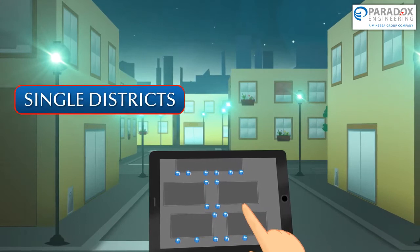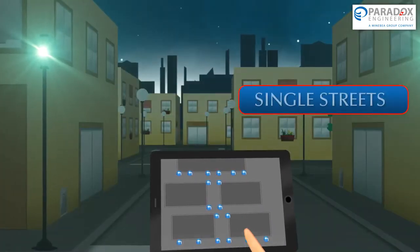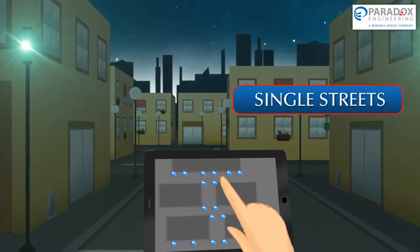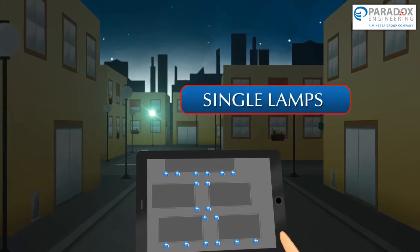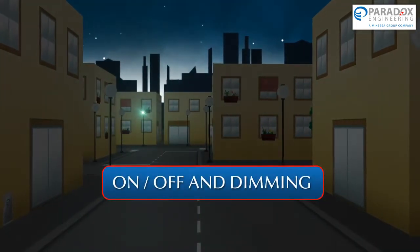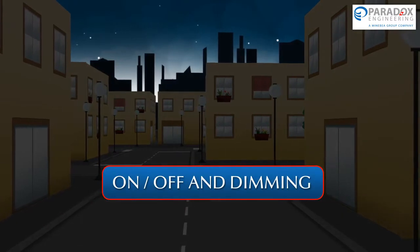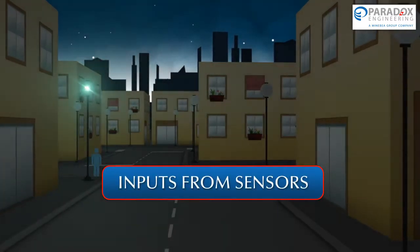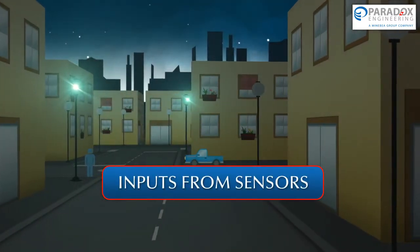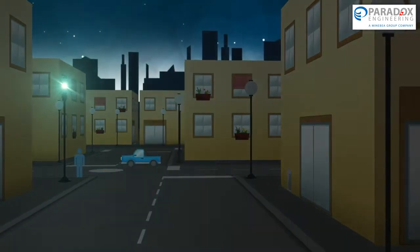Customized and adaptive lighting patterns can be set for single districts, streets and even single lamps, with on, off and dimming actions according to programmed schedules, inputs from sensors or on demand. Benefits are proved to be significant, especially if combined with human or vehicle motion sensors and other similar devices.